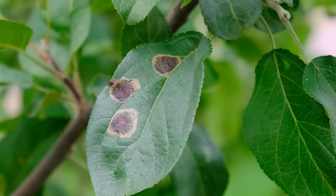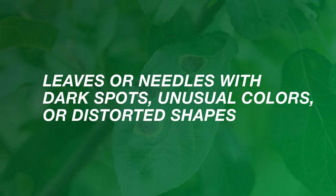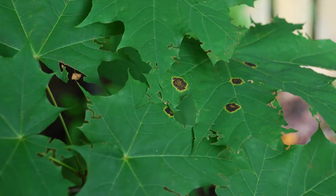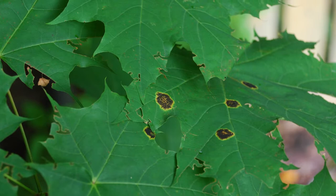Leaves or needles with dark spots, unusual colors, or distorted shapes. Unexplained changes in leaf or needle color could be symptoms of several problems, including tree disease.